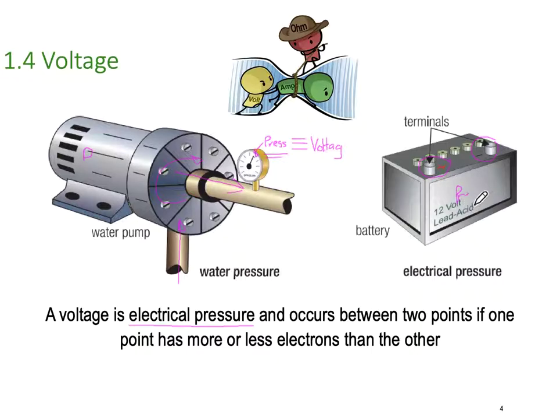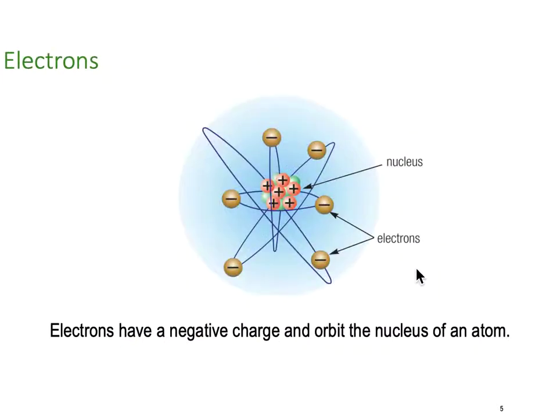So voltage is electrical pressure. It occurs between two points if one point has more or less electrons than the other. The battery is providing this electrical pressure applied across the terminals. In this particular case, it's a 12 volt battery, so the pressure we're being applied here is a pressure of 12 volts.